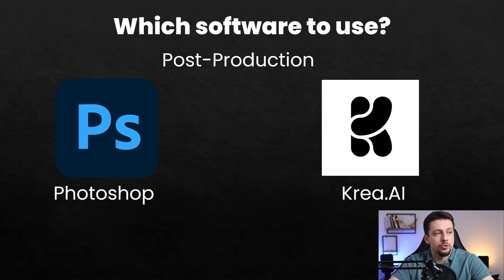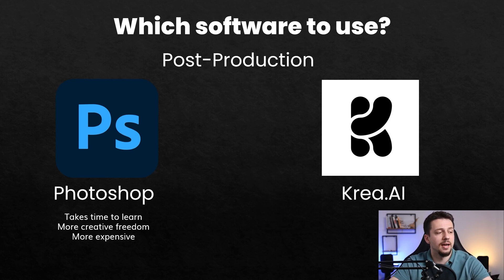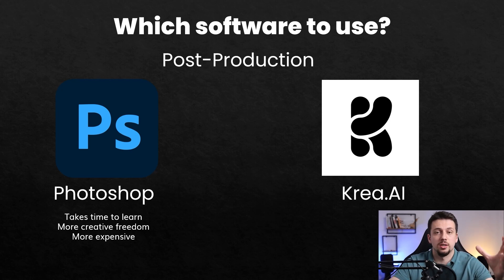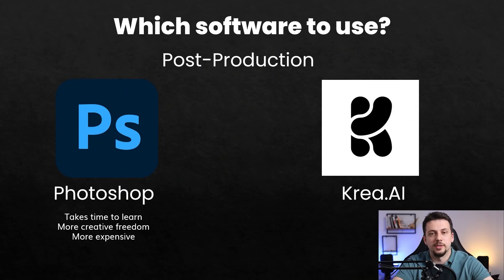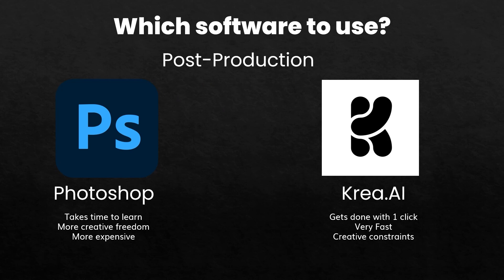Now for post-production, once you choose your modeling and rendering software, you also have to choose a post-production tool. I have two options: Photoshop and Kriya.ai. Photoshop takes time to learn, has a harder learning curve, but offers more creative freedom and a lot of different choices you can input in your render. It's very powerful if you know what you're doing, but it also has a monthly subscription cost. Kriya.ai can make your post-production in only one click — it takes literally a few seconds — but it has different constraints because you don't have as much freedom in the decision-making of the post-production.